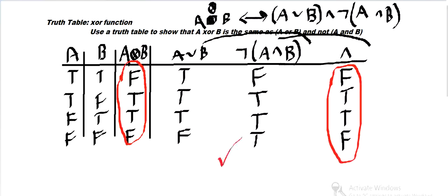So, those are the same. We proved using a truth table that A XOR B is the same as A or B and not A and B. Hope that makes sense. And hope you have a great day. Goodbye.